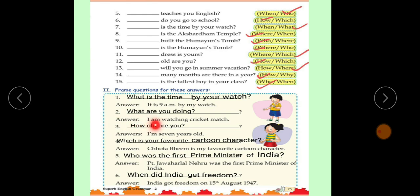Number 2. I am watching cricket match. The question is, what are you doing? Ye bhi ho sakta hai aur ye bhi ho sakta hai. What are you watching? Okay?